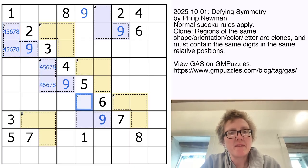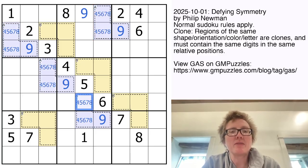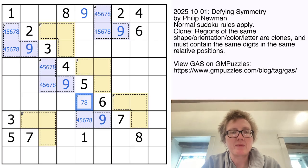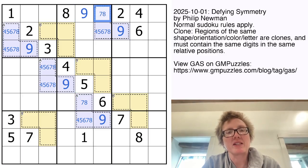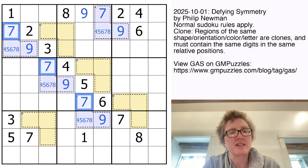So let's see where we can go from here. Now the top left corner can't be four, five, or six, because it's contained within this region. And it also can't be eight, because it sees this eight. So that's going to be a seven.